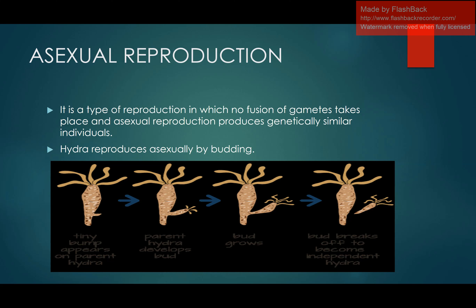If sexual reproduction had taken place, it gives rise to variations because it involves two different types of gametes. But when there is no gamete formation and only simple Mitosis, the next generation is identical to the parent organism. Hydra reproduces asexually by budding — a tiny bump appears on the parent hydra, develops into a bud which grows in size until it can survive on its own, then breaks off to become an independent hydra.